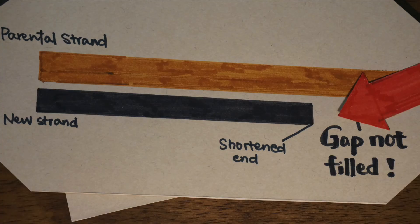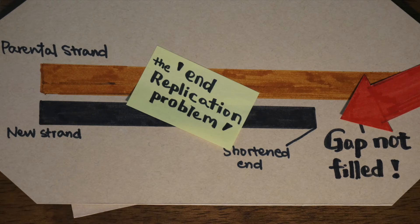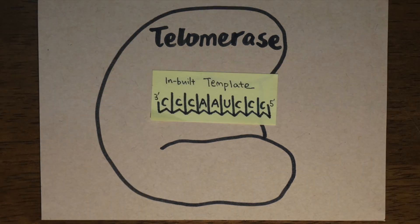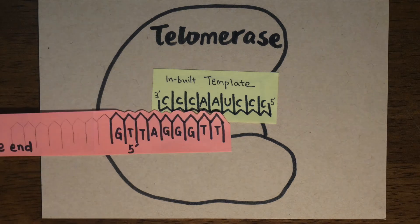Which altogether is termed the end replication problem. In normal cells, this is overcome by the ribonucleotide protein telomerase, which recognizes the telomere repeat sequence via an inbuilt RNA template and extends the length of the telomeres through its reverse transcriptase activity.